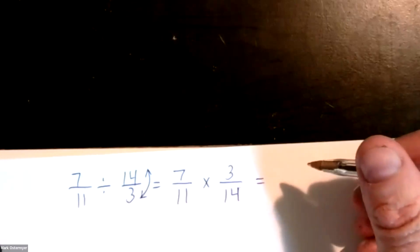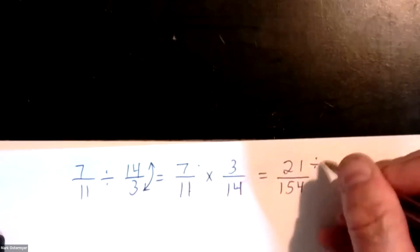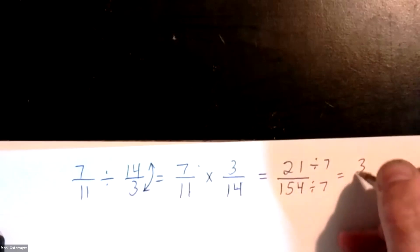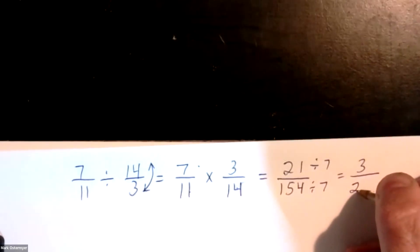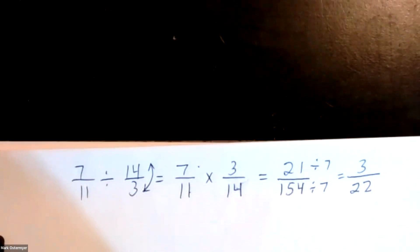Seven times three is twenty-one, eleven times fourteen is one fifty-four. Can we reduce this now? It reduces down by seven — down to three over twenty-two. There's your answer.